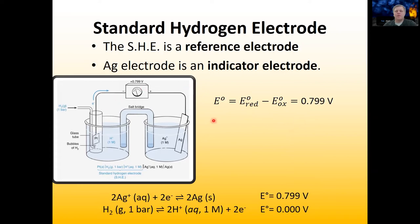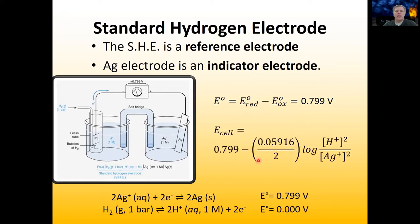This all has a problem though — the potentials on either side depend on the concentration of the silver and protons in the solution. Here I have the Nernst equation written out with the standard reaction potential and the number of electrons, which is two, and the concentrations of these two species, both squared. As this reaction proceeds, the concentration of your protons and your silver ions is going to vary. So how do you know at what point to make your measurement of the potential?